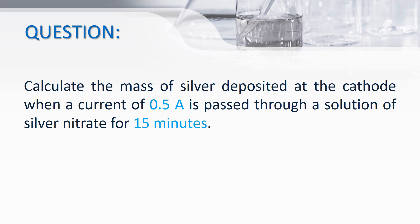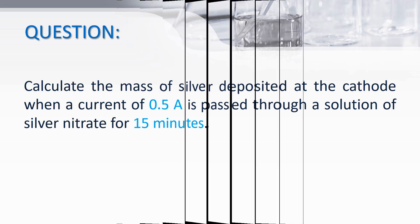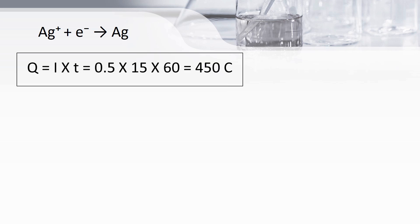In this question, we are given two data: the current passed is 0.5 amperes and the time taken is 15 minutes. The first step is to write down the equation of the reaction taking place, which is Ag⁺ + e⁻ → Ag. We can find the charge passed using the formula Q = It, where I is 0.5 amperes and t is 15 × 60 seconds. Time must always be in seconds, so we multiply 15 minutes by 60 to convert it. Using this formula, we get the charge as 450 coulombs.